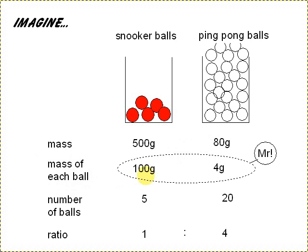So we could say that for snooker balls, that's 100 grams per ball, but ping pong balls much lighter, 4 grams per ball. This is equivalent to the MR, the relative atomic mass of atoms, the mass of each atom.